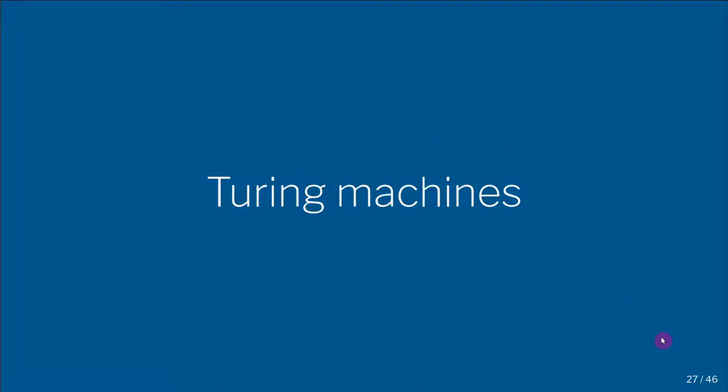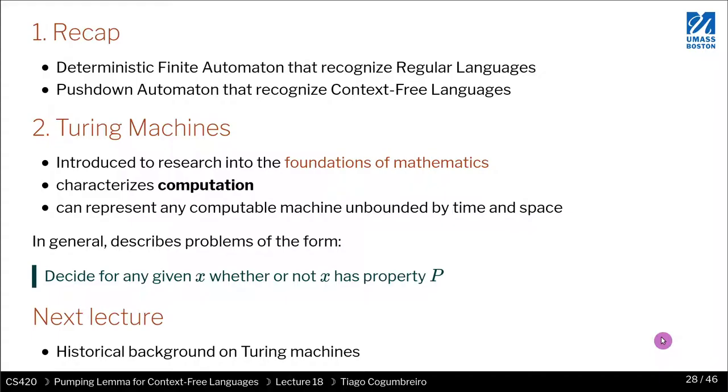Let us now talk about Turing machines. As we've learned, we've seen deterministic finite automaton, and non-deterministic as well, that are able to recognize regular languages. We also learned about pushdown automaton that can recognize context-free languages. So we introduced these two families of languages, first are regular, second are context-free, and we introduced some kind of machine that is able to recognize such languages.